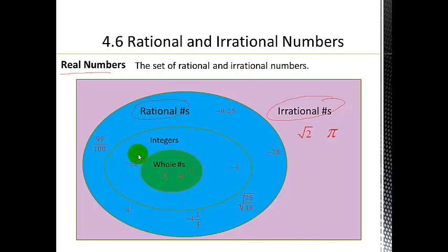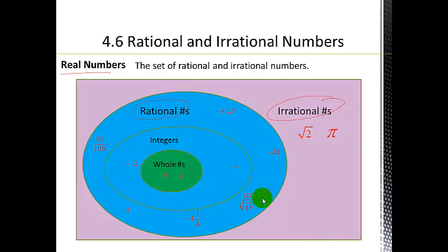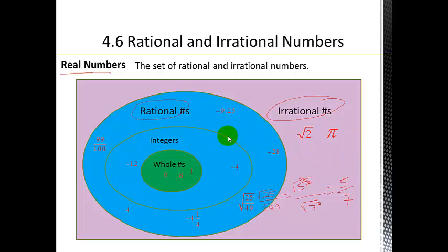The whole numbers include zero and our positive counting numbers. The integers include negatives. Rationals include fractions, integers, negative fractions, and mixed numbers that can be changed to decimals. Here's a little trick: not all square roots are irrational. For example, the square root of 25 over 49 simplifies to the square root of 25 over the square root of 49, which is five-sevenths — a rational number in fraction form.